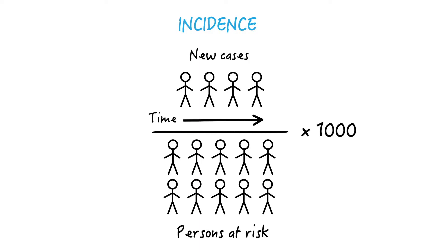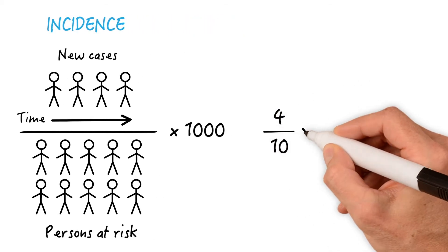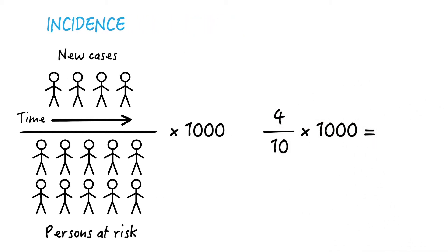Let's take the example of a fictitious population of 10 women free from disease. Four of these women develop uterine cancer during a given year. So the incidence is 4 divided by 10 times 1000, equaling an incidence rate of 400 cases per 1000 population per year.